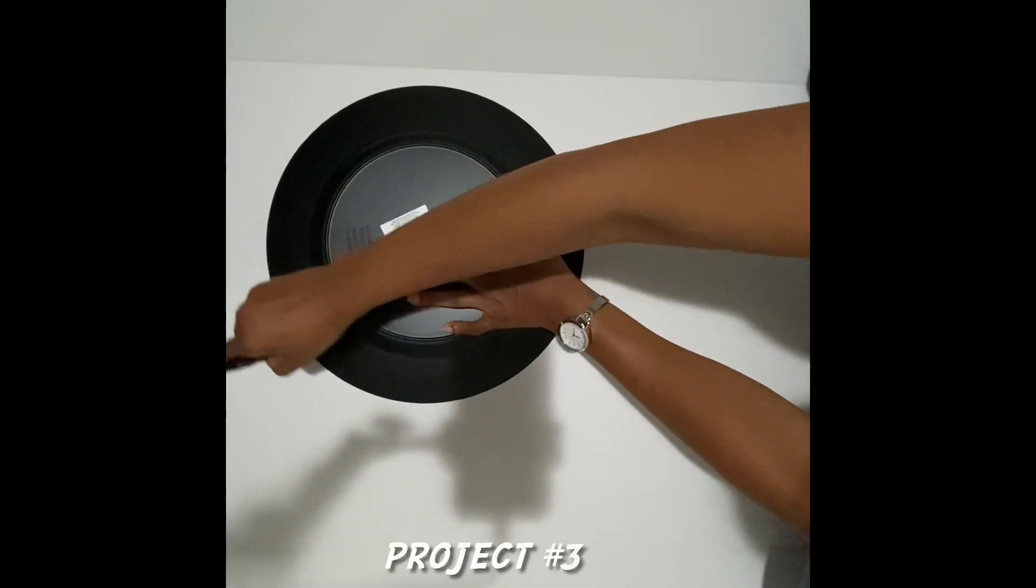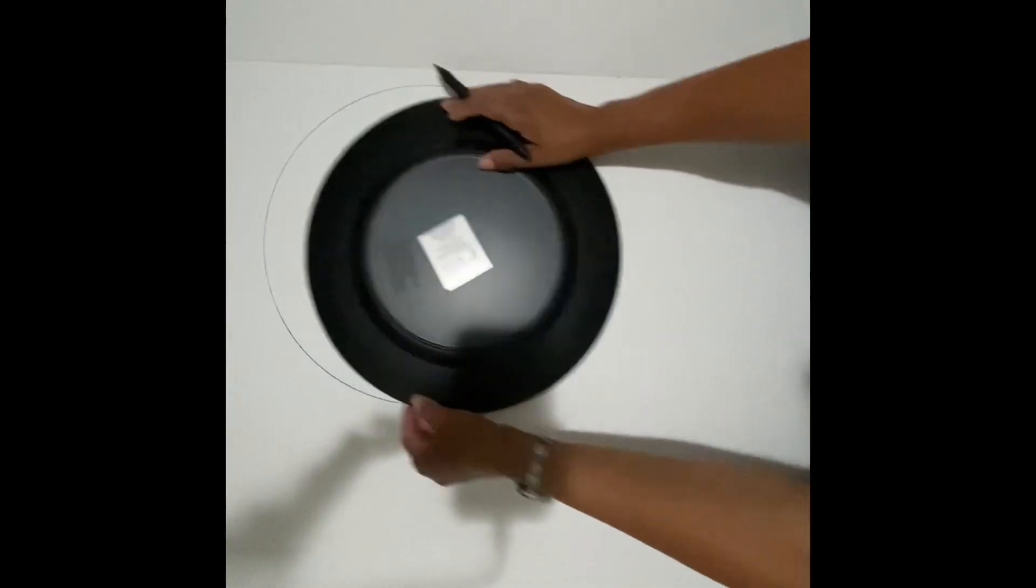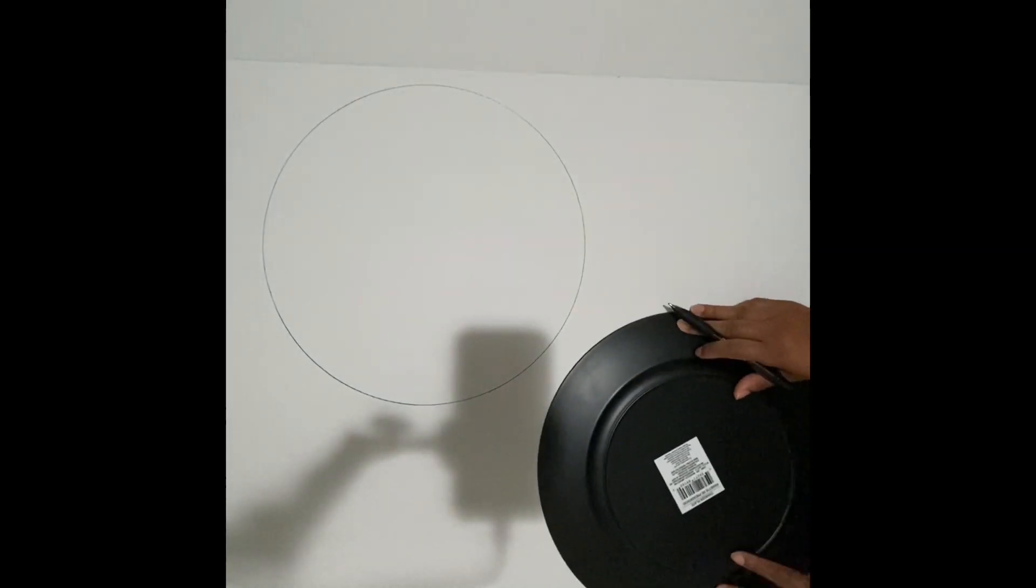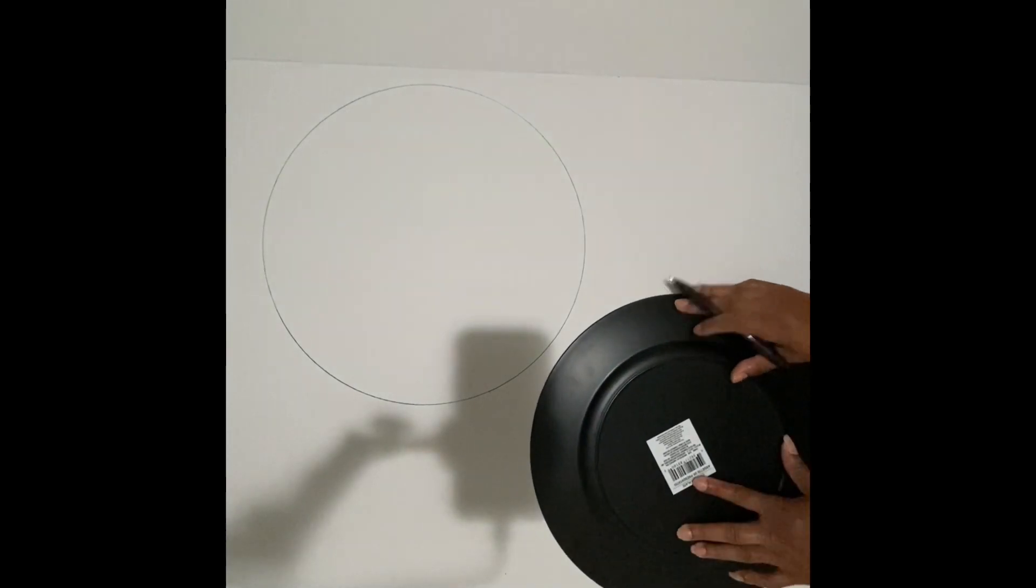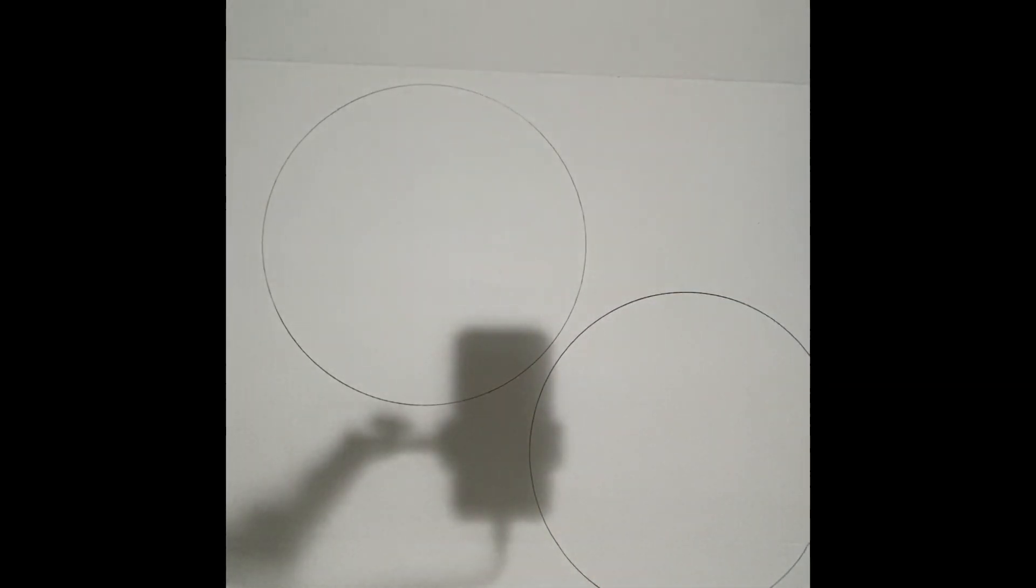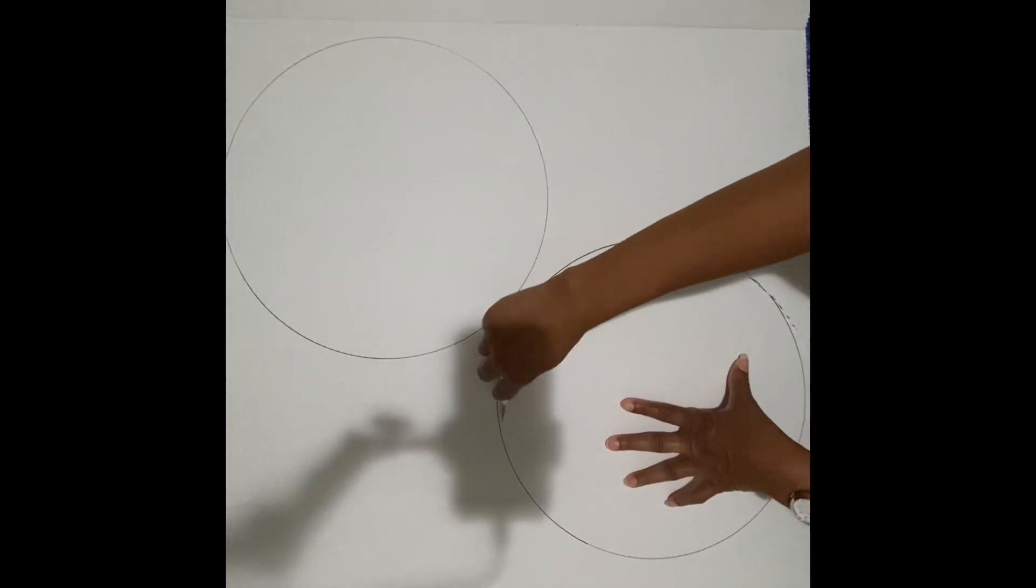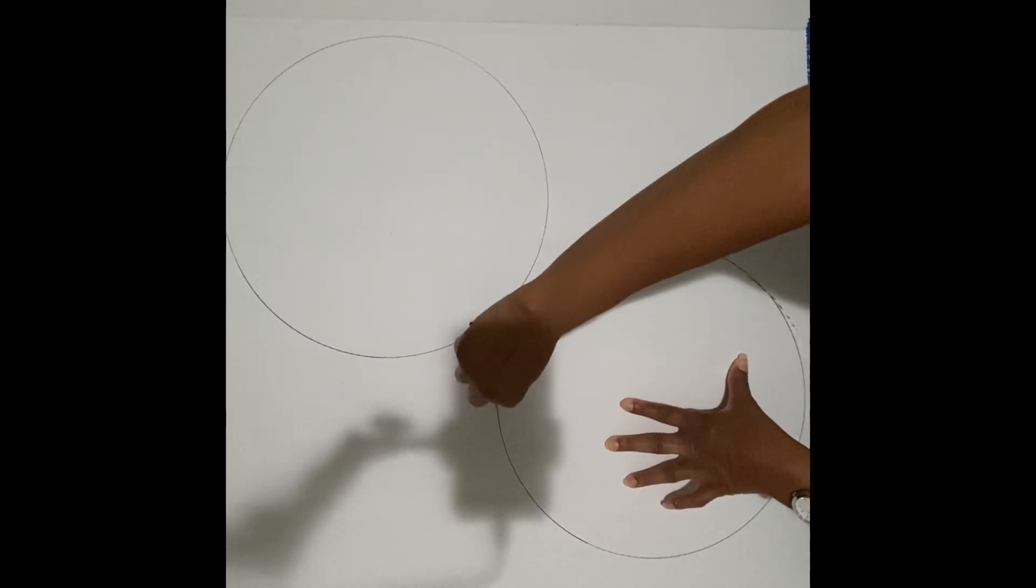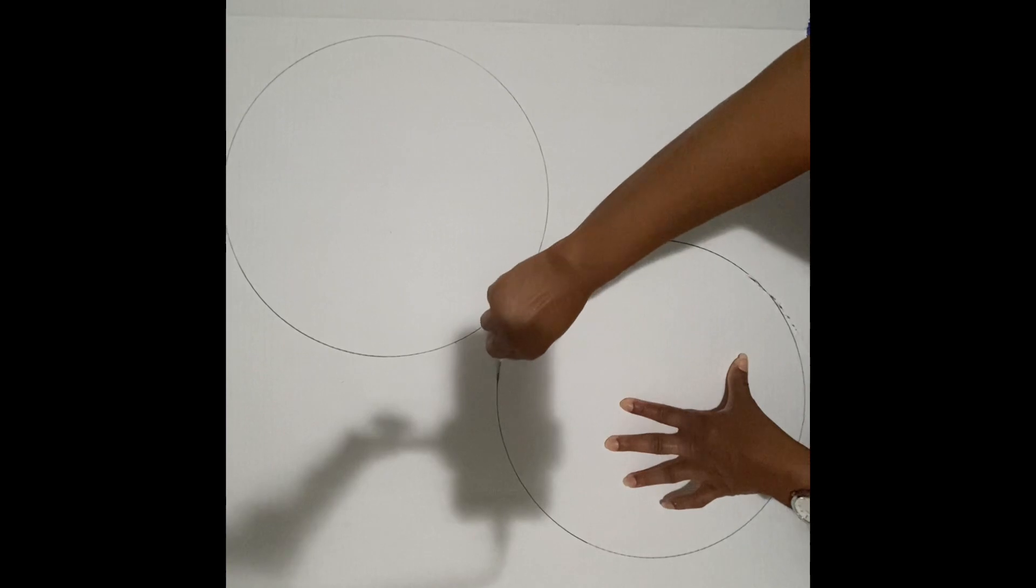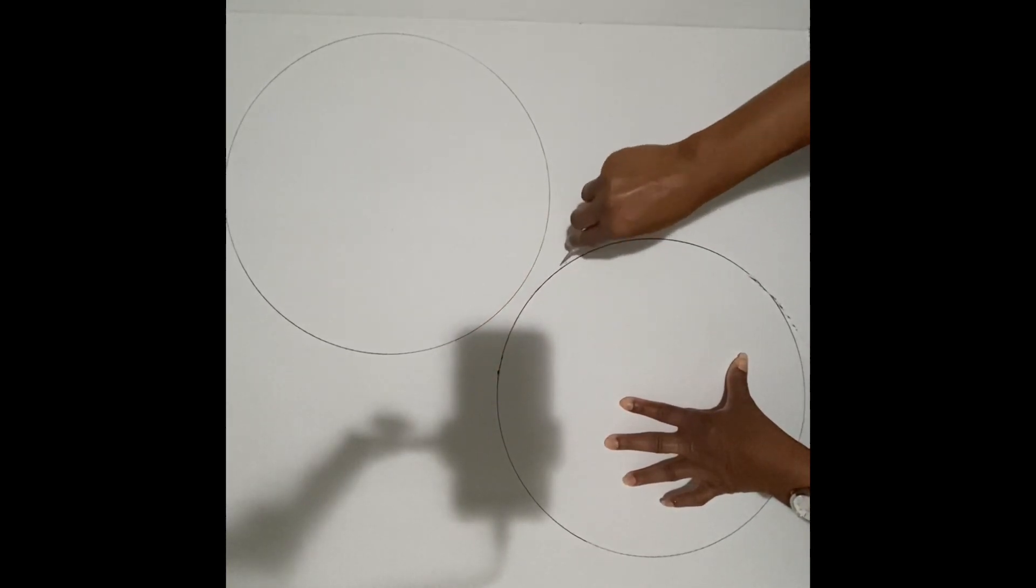Okay guys, this is project number three and I'm going to do another door wreath. This is some project board that I got from the Dollar Tree for a dollar twenty-five and I have a charger plate that I also got from Dollar Tree for a dollar twenty-five. I'm just going to trace these little circles here. I'm going to make two round circles for my wreath. Then here you see me with my exacto knife and I'm just going to cut around and just keep cutting until I get these cut out.